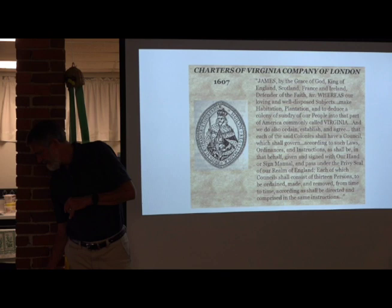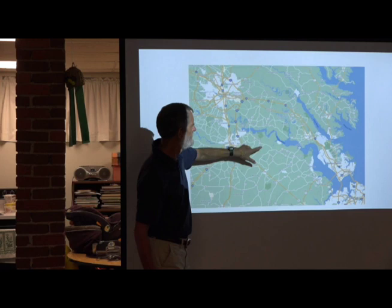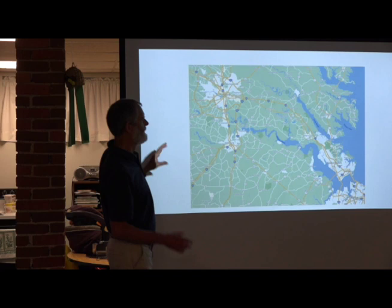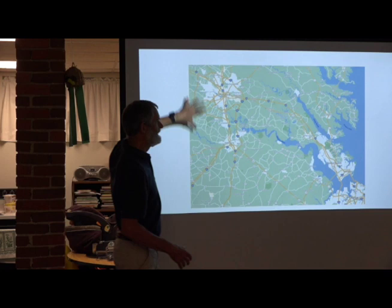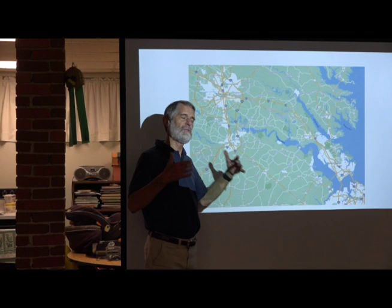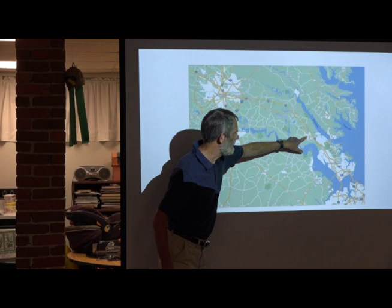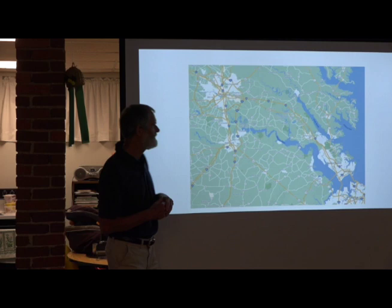Here's Jamestown — the first settlement. This is going to become one of the great historic areas of our country. Richmond during the Civil War was the focus of a lot of fighting. Yorktown, where the Brits surrendered to Washington, is right there. Williamsburg too. So this is where the first settlers came when they arrived at Jamestown.